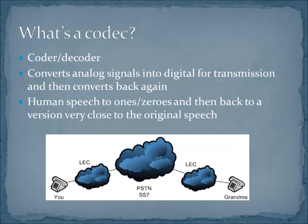A codec, or coder-decoder, has a very particular job. It has the purpose of converting analog signals into digital data for transmission, and then at the receiving end, it converts it back again. The best example that we have is human speech. So we do this all the time, and the codec converts the analog voice signal into those ones and zeros. At the other end of the transmission, you have to take the ones and zeros and turn them back into something that looks a lot like the original analog signal.